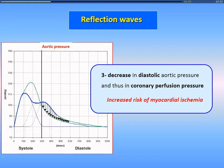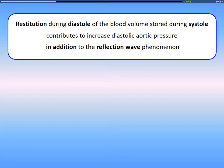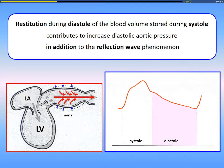So it's not a good situation to have this earlier reflection wave phenomenon. During life, we move from a normal pattern to this abnormal pattern. This also occurs with vasoconstriction, hypertension, and arterial stiffness. During the diastolic phase, there is also a restitution of the blood volume stored during systole, which contributes to increase the diastolic aortic pressure in addition to the reflection wave phenomenon in young people.